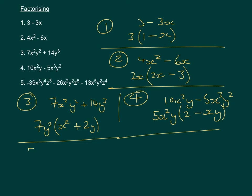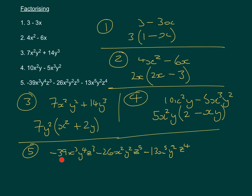The final factorising question looks complex but we take it step by step. Each coefficient is a negative multiple of 13, so we take out minus 13. Every term contains x — the smallest power is x², so we take out x². Every term contains y — the smallest power is y², so we take out y². Every term contains z — the smallest power is z³, so we take out z³. Our factor outside is minus 13x²y²z³.